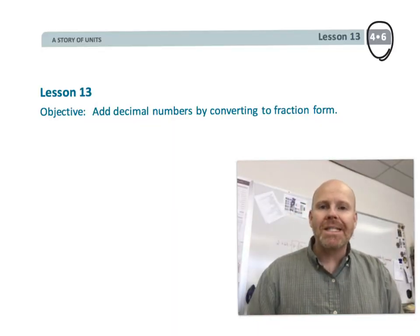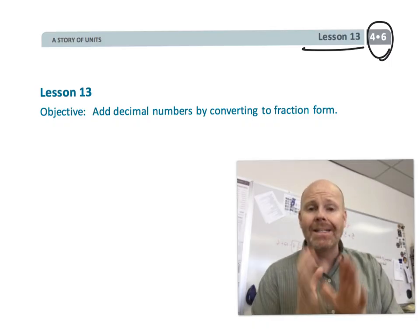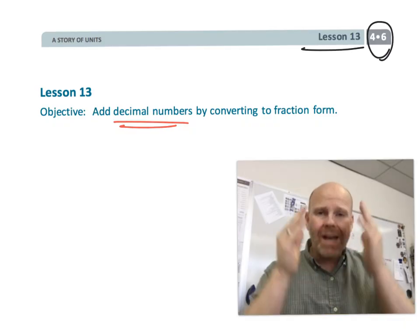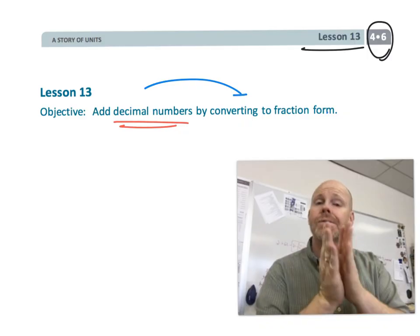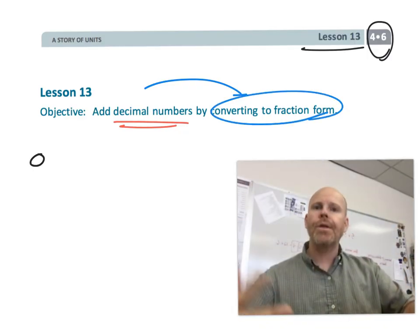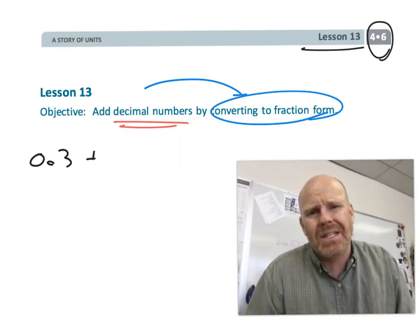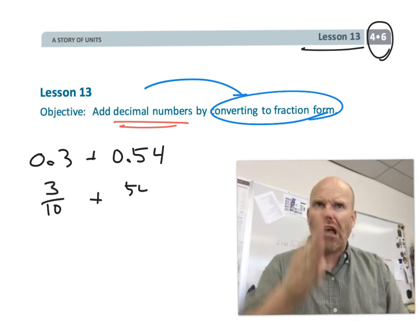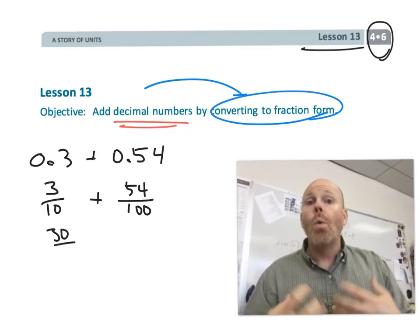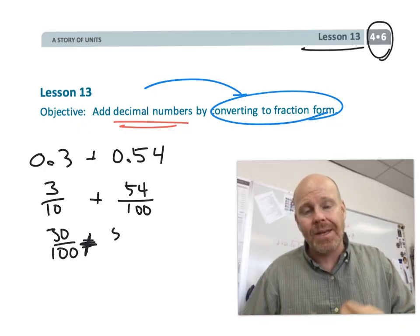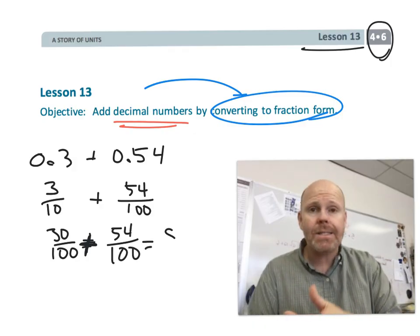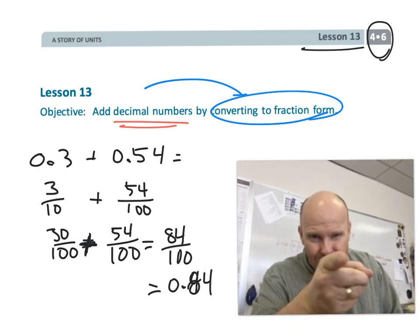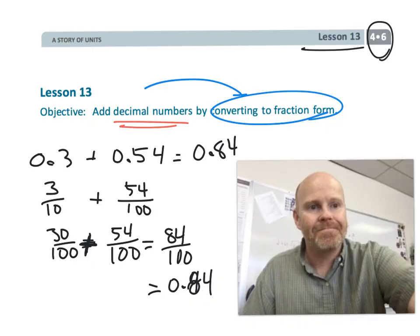This is fourth grade module 6 lesson 13. In this lesson we're going to be adding decimal numbers, but we're not going to be using the standard algorithm yet. Instead, we're going to have students take those decimals, convert them into fractions, add them, and then rewrite the whole thing as decimal equivalents. The idea is we don't want students adding decimals simply because they're mindlessly following a rule — line up the decimals and add like normal. We really want students to be adding decimals because they understand the numbers behind it. This lesson is merely a stepping stone towards what students will eventually do, which is adding using the standard algorithm.